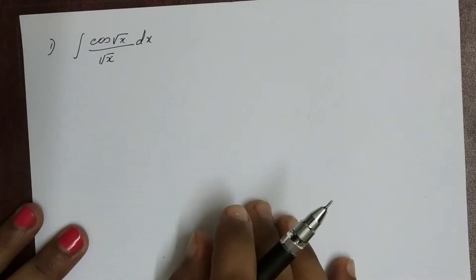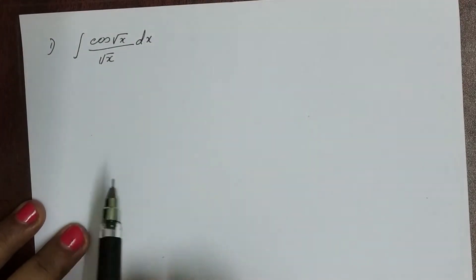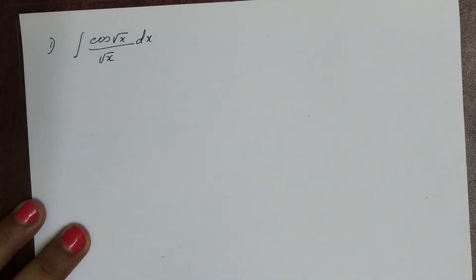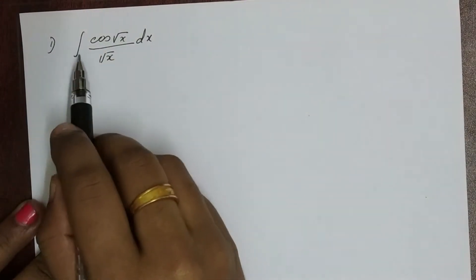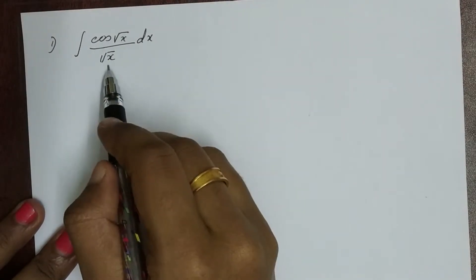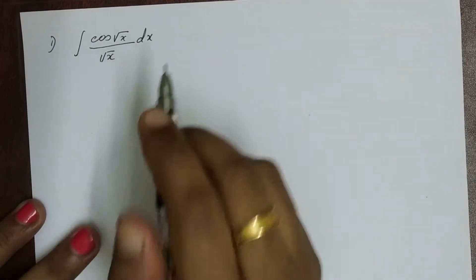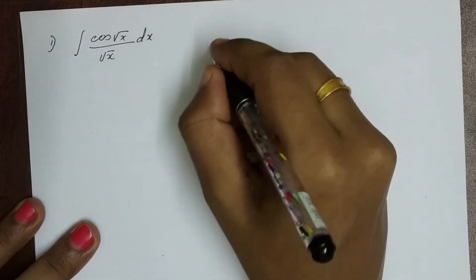Hi students, integration by substitution back-up problems. This is Exercise 7.2. The first integral is cos(√x) divided by √x, dx. Let us understand what substitution is.